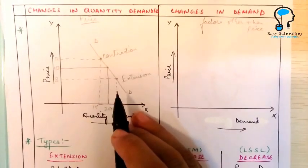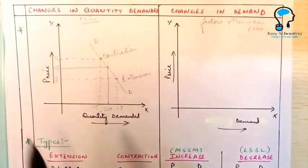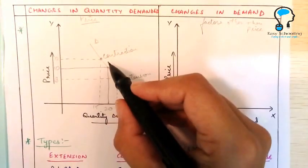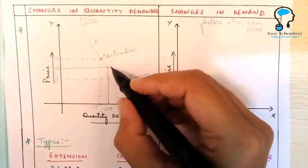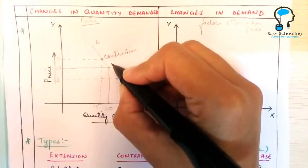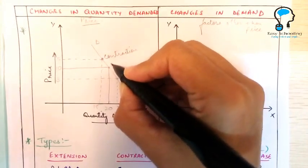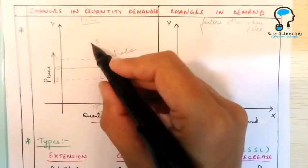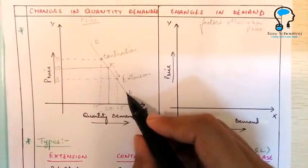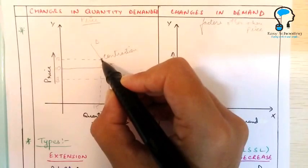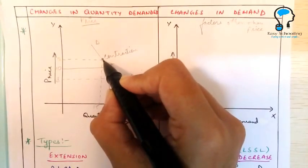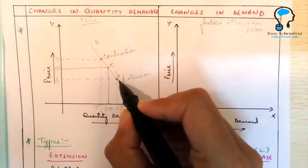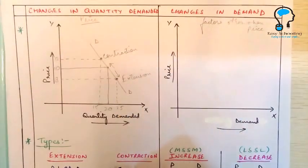One thing to remember here is that change in quantity demanded brings a movement along the same demand curve. The demand curve DD is the same — when a contraction happens it just shifts upwards along the curve, and when there is an extension it just shifts down. So there is a movement on the same demand curve.